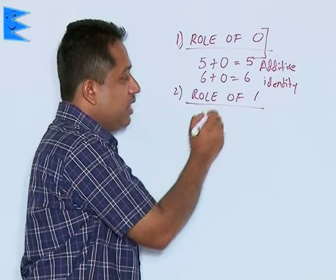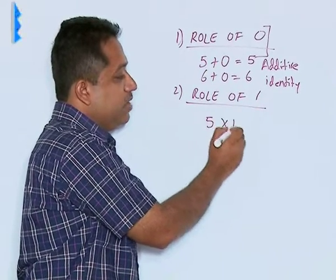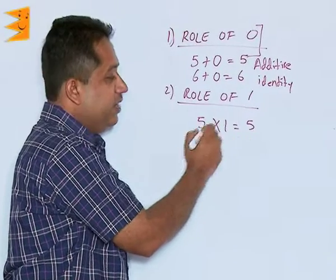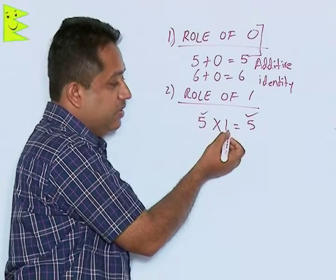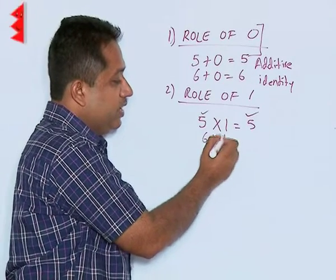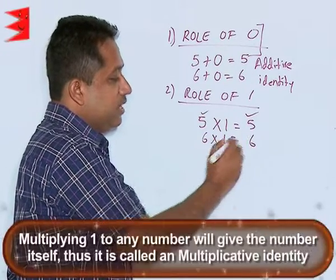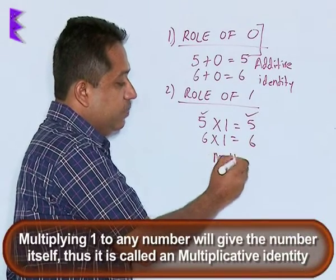But when we look at 1, if I multiply 1 with any number, then I get the number itself. 5 into 1 is 5. We find we are multiplying 5 with 1, we get the number. 6 into 1, we are getting the number. So, 1 is called the multiplicative identity.